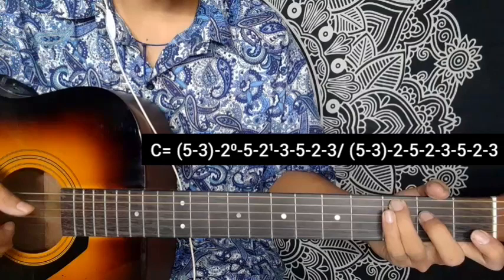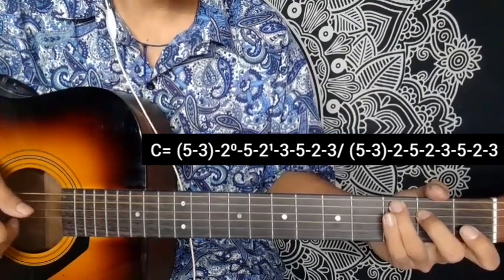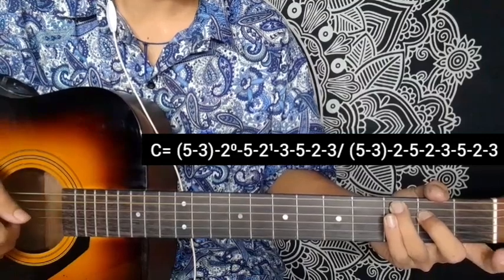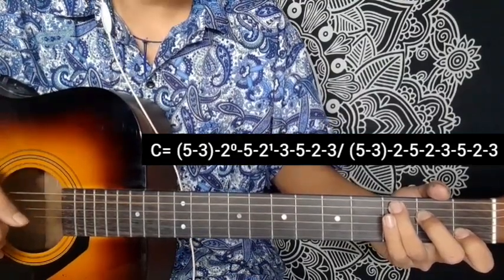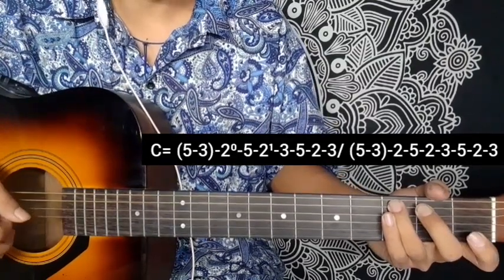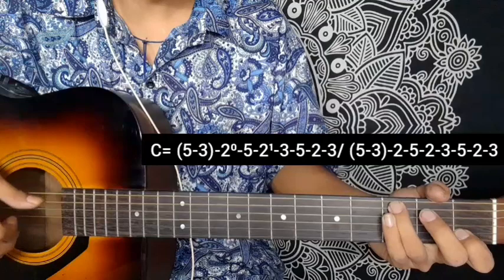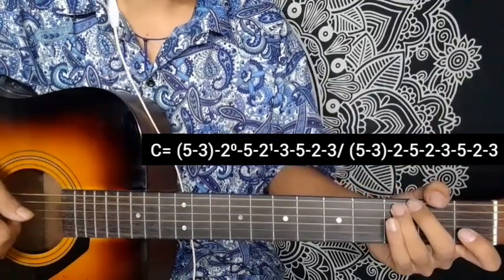So again, C major chord pattern: 5-3 on first string, pick second string open, 5-3-1, then 3-5-2, pull off. That's the first part.